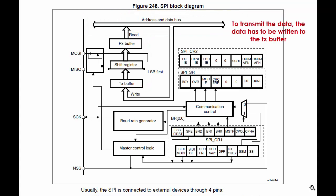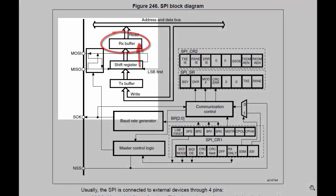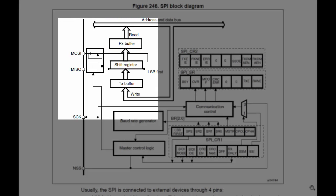To transmit data, the data has to be written to the TX buffer, whose content will then get loaded into the shift register and transmission begins. When the shift register receives one complete byte, it will transfer it to the RX buffer so that you can read it.